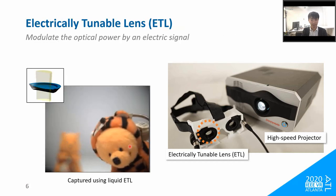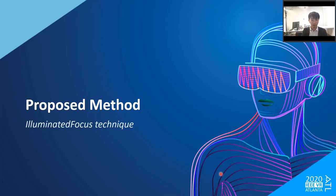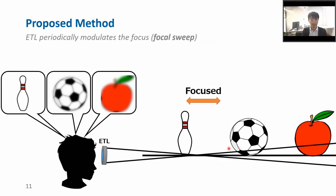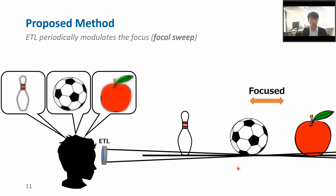ETL is a lens that can modulate the optical power by an electric signal. To describe the illuminated focus technique with a simple example: suppose there are three objects — front, middle, and back — in front of you. When the ETL periodically modulates the focus, only the focused object appears clear and the other objects are blurred. This is called focal sweep.